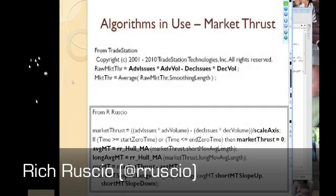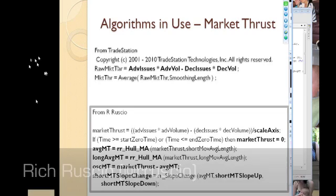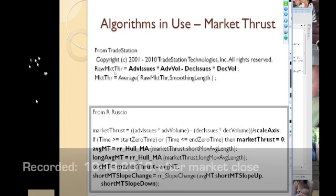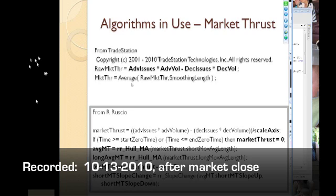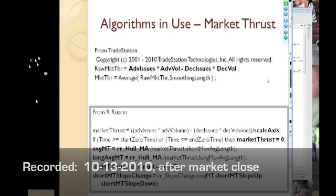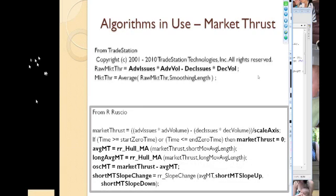The algorithm I use is called Market Thrust: advancing issues times advancing volume, minus declining issues times declining volume. It's relatively simple arithmetic. That gives you what everybody applies in TradeStation. If you have TradeStation, you have this code — you can find it as Market Thrust. It's an indicator you can put on a chart yourself.